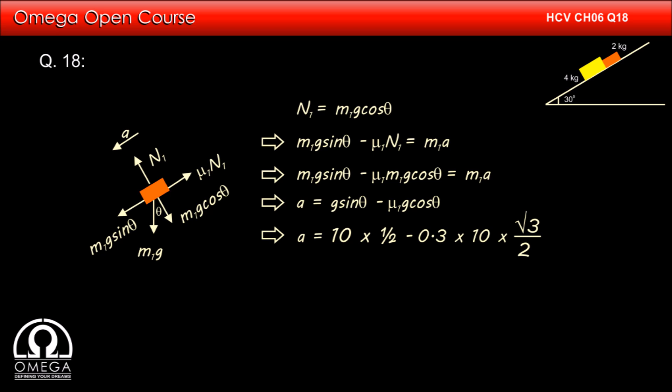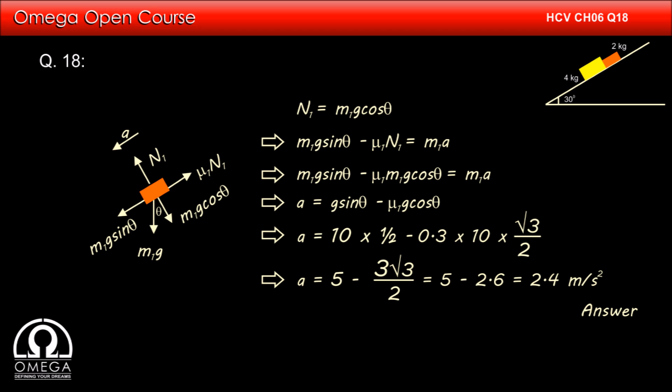Putting in the values: a = 10×0.5 − 0.3×10×(√3/2) = 5 − 3√3/2 = 5 − 2.6 ≈ 2.4 m/s². This is the answer to the second part of the question.